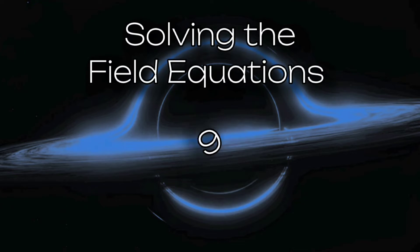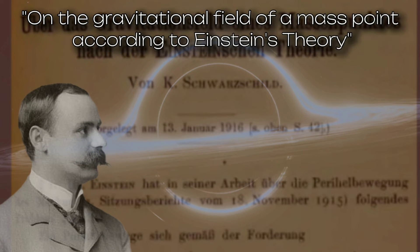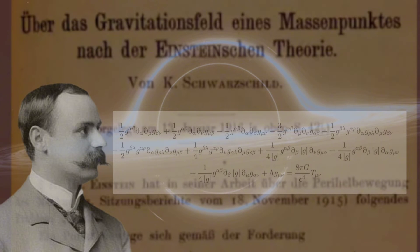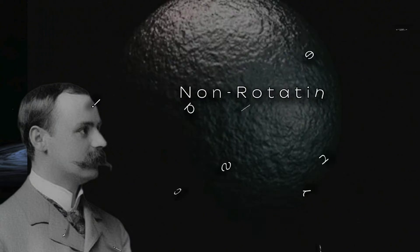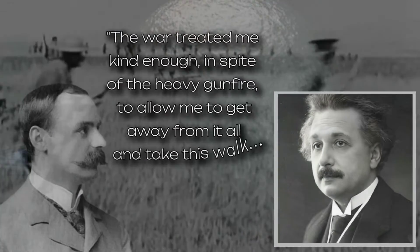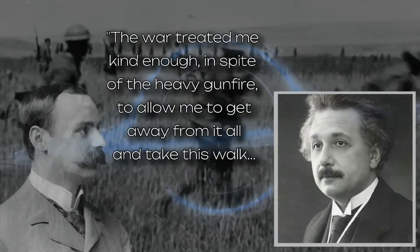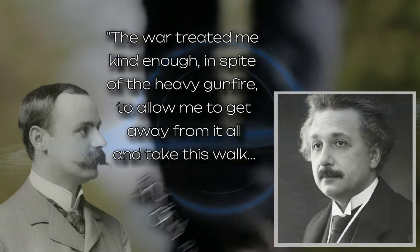6. Solving the Field Equations. Einstein's field equations, first appearing in November of 1915, formed the core of his theory of general relativity, describing how matter and energy influence the curvature of spacetime. Amazingly, while Schwarzschild was serving on the Eastern Front, he would be the very first to find an exact solution to these equations in less than two months' time. In his first paper, titled 'On the Gravitational Field of a Mass Point according to Einstein's Theory,' Schwarzschild solved the ten differential field equations by finding a solution that described the geometry of spacetime around a non-rotating, spherically symmetrical mass. Schwarzschild wrote to Einstein: 'The war treated me kind enough, in spite of the heavy gunfire, to allow me to get away from it all and to take this walk in the land of your ideas.'